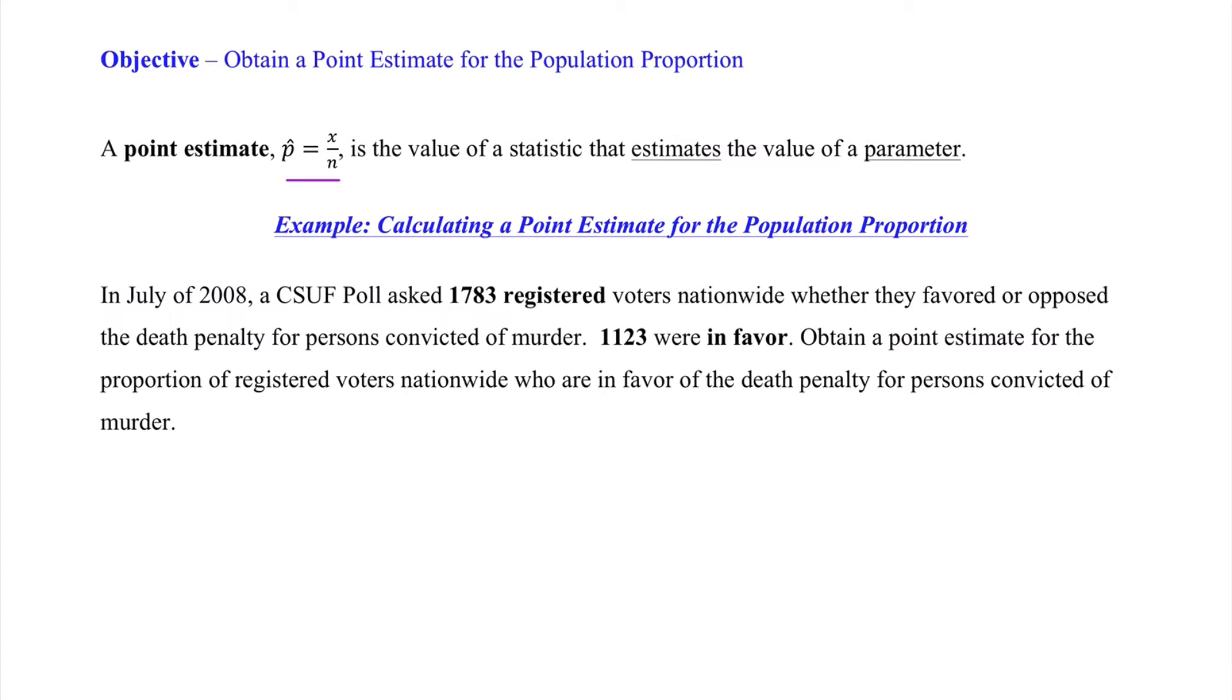So a quick example. We're told in July of 2008, a Fullerton poll asked 1,783 registered voters nationwide whether they favored or opposed the death penalty for persons convicted of murder. 1,123 were in favor. We're told to obtain a point estimate for the proportion of registered voters nationwide who were in favor of the death penalty for persons convicted of murder.